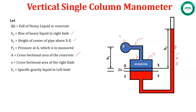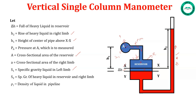S1 is the specific gravity of the liquid in the left limb and S2 is the specific gravity of the heavy liquid in the right limb. Rho 1 is the density of liquid in the pipeline and rho 2 is the density of heavy liquid in the reservoir. Now let us derive the equation to calculate the pressure at A.